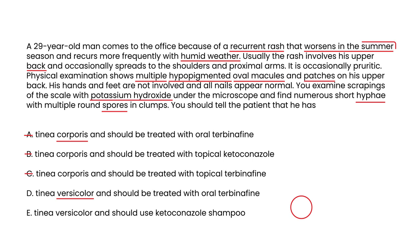We're left with choices D and E, which both are tinea versicolor — the correct diagnosis. But how do you treat it? The best treatment for tinea versicolor is something that will cover all the lesions in that area of the body. Most commonly you use any of the azoles, and the most common is ketoconazole, given as a shampoo. So that would be choice E.